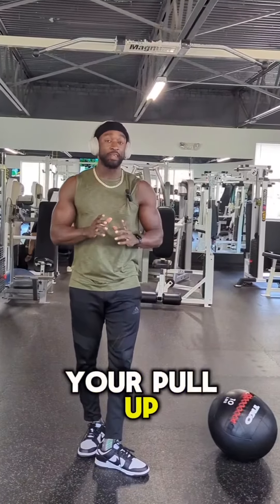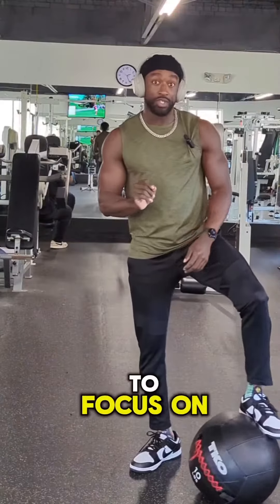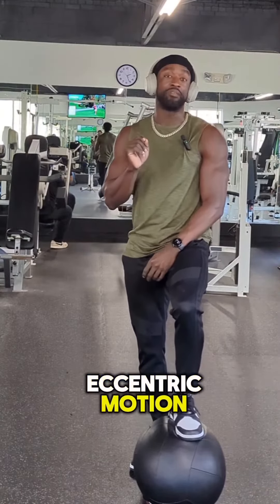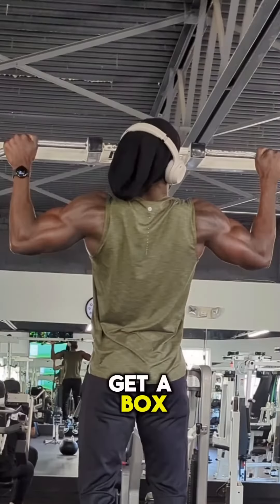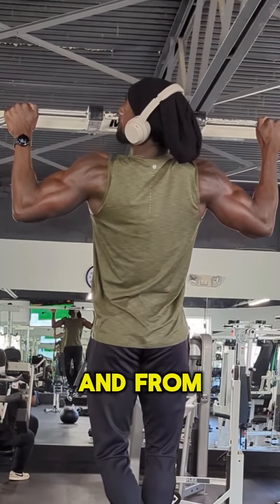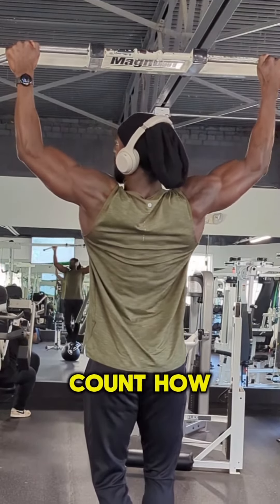If you've been struggling to get your pull-up game on point, I'm gonna give you a super helpful tip. What you need to focus on is your eccentric motion when you're coming down. For example, use a box to keep yourself set up to the high position, and from here slowly come down counting how many seconds.